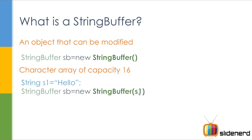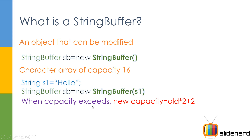If you don't know what a constructor is, don't worry — I'll talk about classes later. When your capacity exceeds, your new capacity is going to be old capacity into 2 plus 2. The character array is of size 16, so if you have a big piece of text like 'Hello ABCDEFG...Z' that exceeds 16, your new capacity will be the old capacity — whatever it was, say 16 — into 2 plus 2. This is done by your JVM automatically; you don't have to remember this.